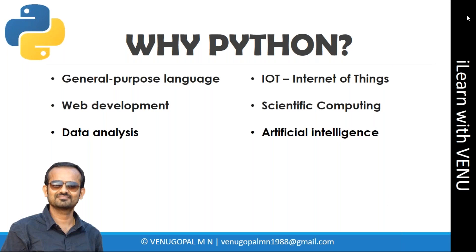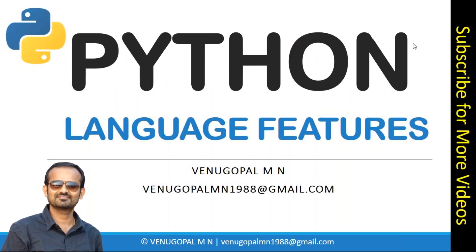Coming to another important aspect of Python applications: artificial intelligence. This is the most happening area in our 21st century. You can build more and more complex algorithms to make your system artificially intelligent, and you can also use this programming language for the implementation of machine learning concepts. This is why I chose to learn and upgrade my skills with Python.